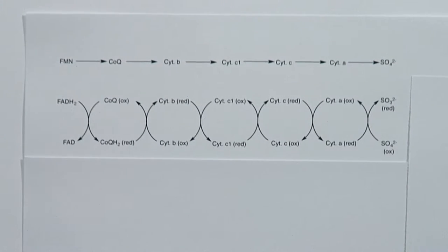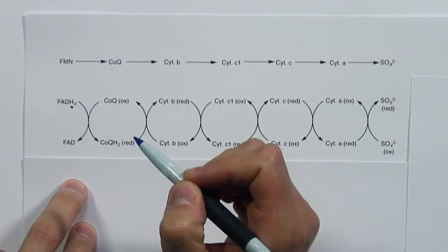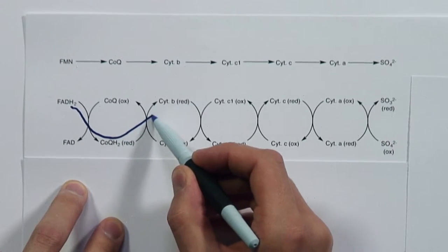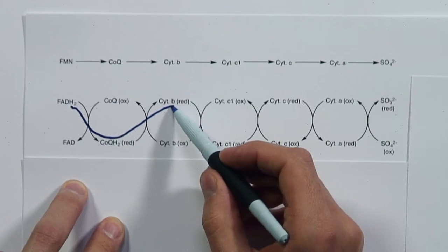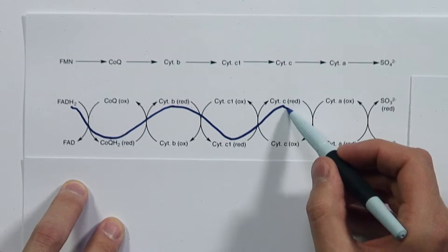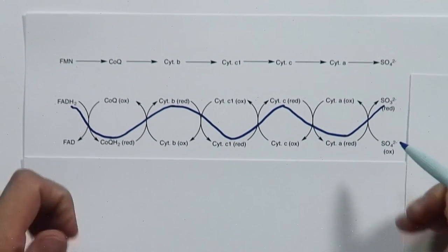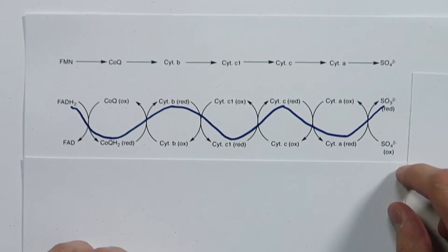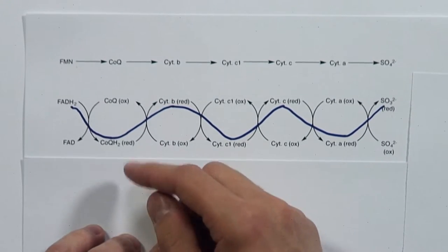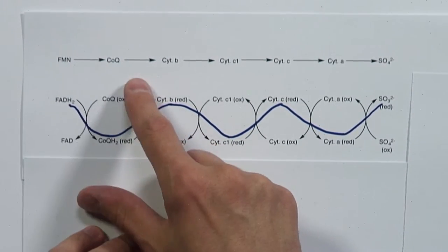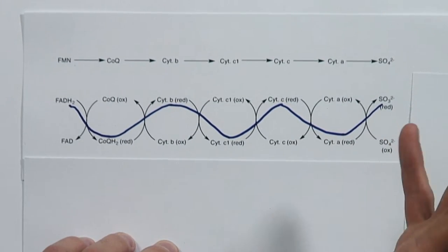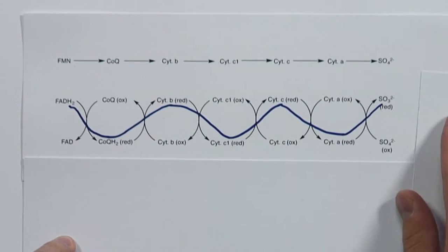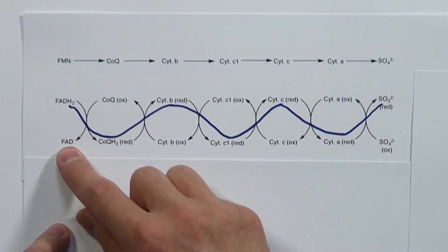If we draw how the electrons move through this chain, they start at FADH2, get transferred to reduced coenzyme Q, which passes them to cytochrome B in its reduced form, then to cytochrome C1, cytochrome C, cytochrome A, and finally end up in sulfite. Except for the initial flavin and final electron acceptor sulfate, all other intermediates get regenerated — going from oxidized to reduced and back. So all these electron carriers are needed only in catalytic amounts. The only things consumed are FADH2 and sulfate, and the products are FAD and sulfite.